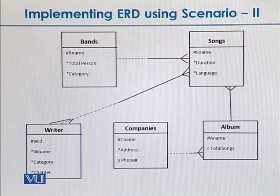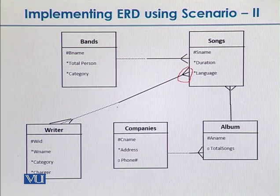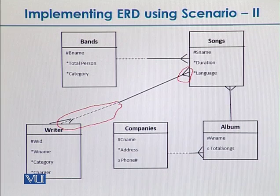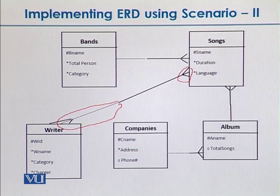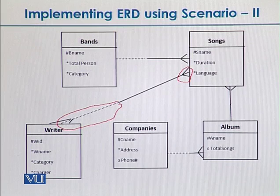Looking at the Writer-Song relationship: a writer can write zero, one, or more songs — the multiple symbol represents more than one, and the dotted line means zero is possible. But a song will be written by at least one or more writers. If we read from the song side, a song can be co-written — two people can write it together. This is where an assumption comes in, since the scenario doesn't clarify this. I am assuming there is an option of co-writing a song, which is possible.